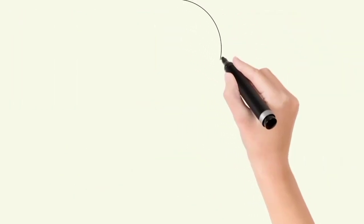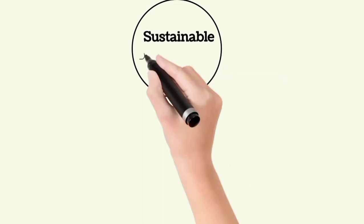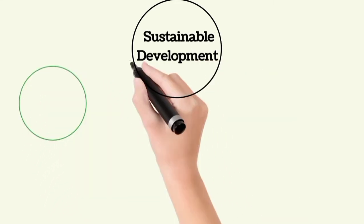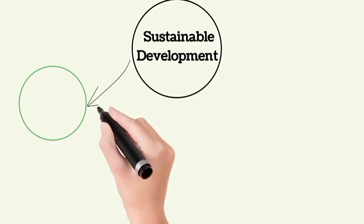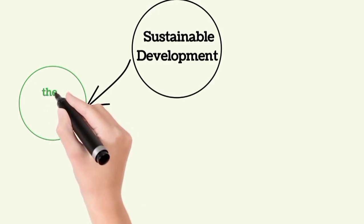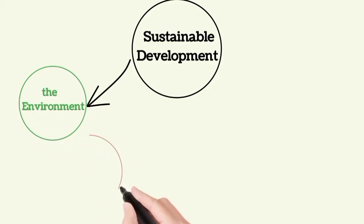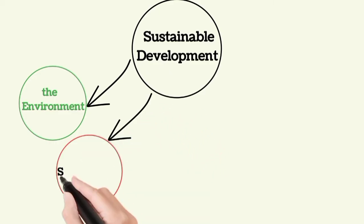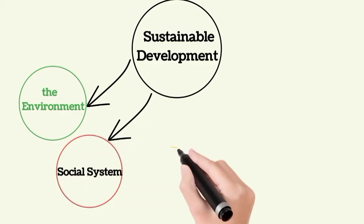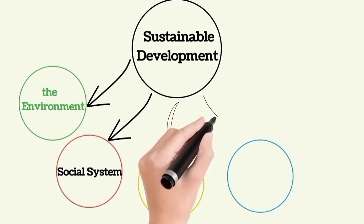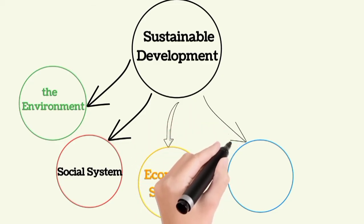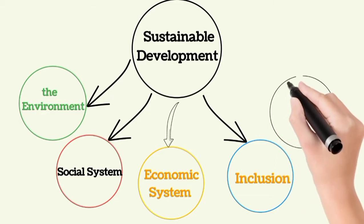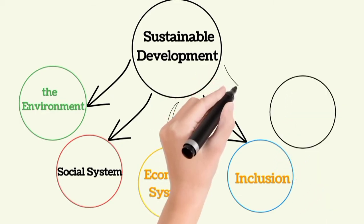Now, here come the five pillars of sustainable development. It is important to state that without sustainable development, we risk degrading the environment, harming society and jeopardizing the future of a planet. It is in this context that we have highlighted these five basic pillars of sustainability: the environment, the social system, economic system, inclusion, and equity.